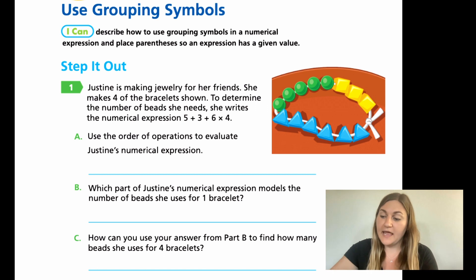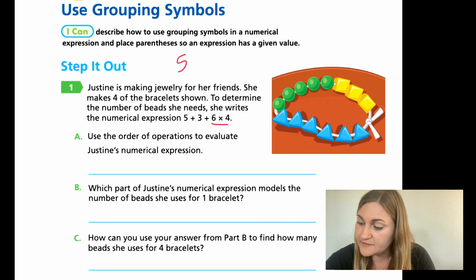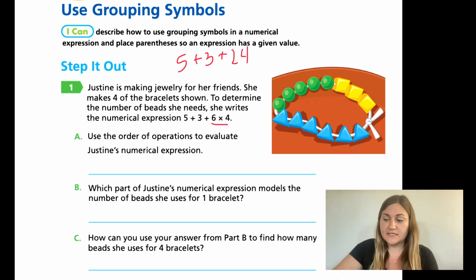In letter A, it says use the order of operations to evaluate Justine's numerical expression. Remember from the past lesson, we have to multiply first. So we have to do this 6 times 4 first. 6 times 4 is 24. Then we're going to move from left to right. So right now we're going to have 5 plus 3 plus 24. Now that they're all in the same step, I can go ahead and solve. 5 plus 3 is 8. 8 plus 24 is 32. So my answer to this problem would be 32.